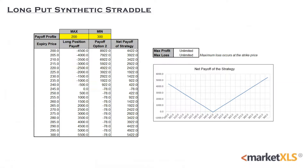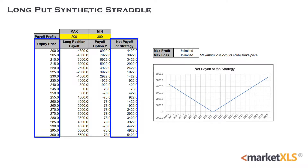MarketXLS offers a net payoff table and a net payoff diagram to help the user observe the potential profit or loss at different expiry levels. The user has to enter the minimum and maximum payoff profile. The table contains the net payoff of the strategy at different expiry prices. In the chart, the Y axis is the net payoff of the strategy and the X axis is the range of expiry prices.